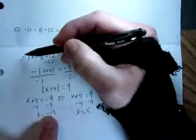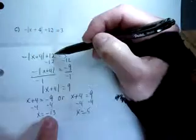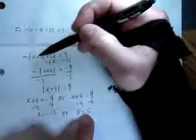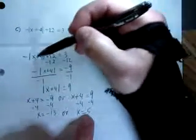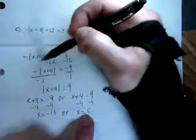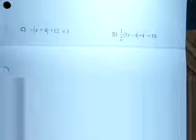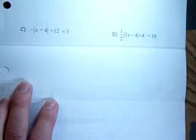We said, at this point, using the word or, we're going to copy what's inside the absolute value, x plus 4. We're going to set it equal to the opposite of this number, which is negative 9. Or, we're going to copy what's inside this absolute value and set it equal to the positive of that number.